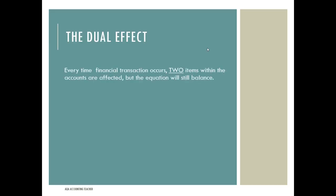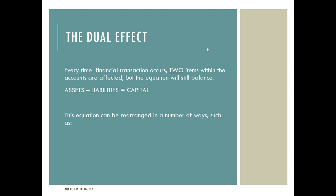The dual effect is what double-entry bookkeeping is built on — the idea that every time a financial transaction occurs, two items within the accounts are affected, but the equation will still balance. Every time something happens, you have to identify the two things that have been affected: what is it we've bought, and how have we paid for it? Has it been paid from the bank, by cash, or is it going to be paid at a later date? The accounting equation — assets minus liabilities equals capital — can also be rearranged as assets equals liabilities plus capital.